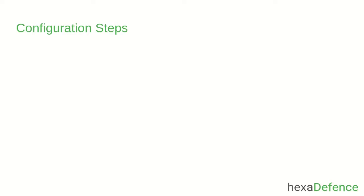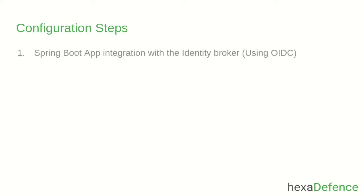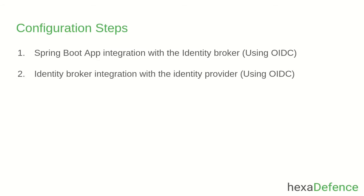Let's go through the configuration steps. The first step is Spring Boot application integration with the identity broker. As the second step, we need to integrate the identity broker with the identity provider. In this case, both are Keycloak servers and I am using OpenID Connect protocol for both integrations.